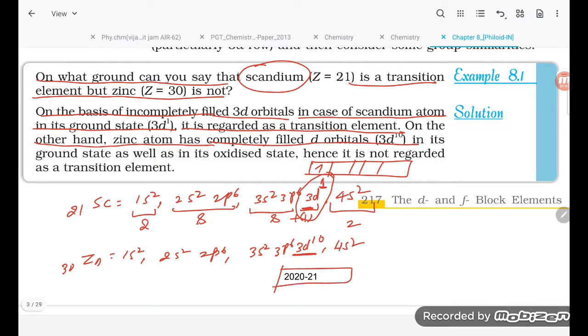So here you can see, if you are talking about this case: 1, 2, 3, 4, 5, 6, 7, 8, 9, and 10. This is the completely filled d orbital in its ground state as well as in its oxidized state. Hence it is not regarded as a transition element. So this is the reason behind that scandium is being called the transition metal but zinc is not.